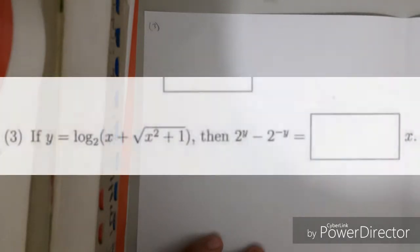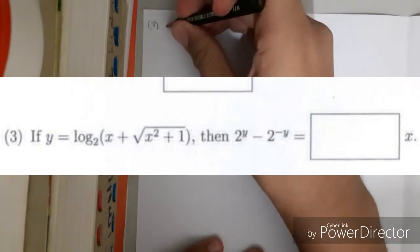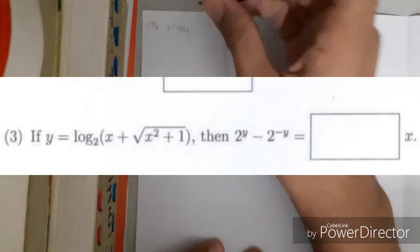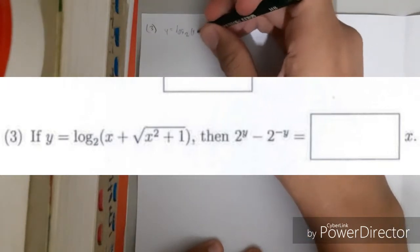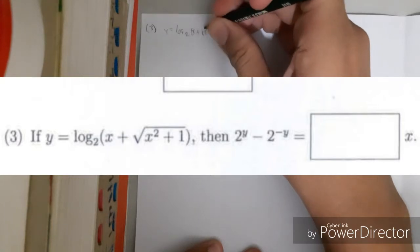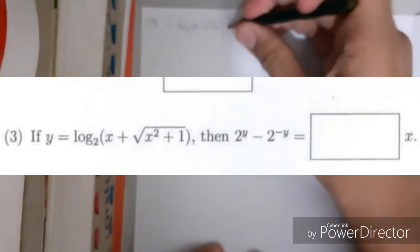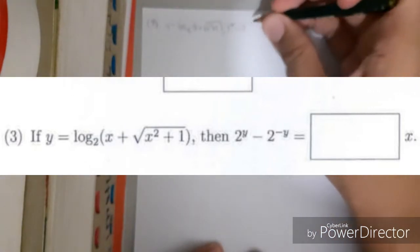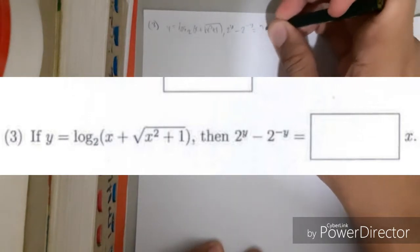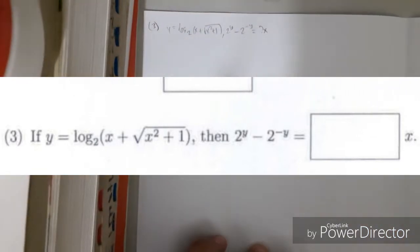Hello everyone, welcome back. This is number three. The original question is: if y equals log base 2 of (x plus root of x squared plus 1), then 2 to the power of y minus 2 to the power of negative y equals what times x? If you look at it, this is rather simple.